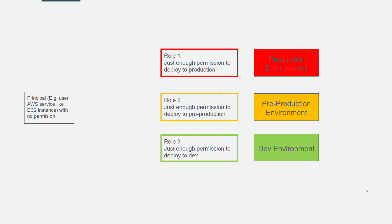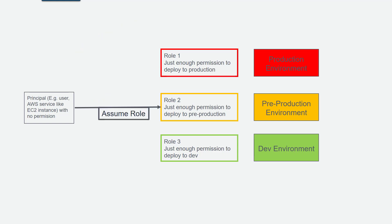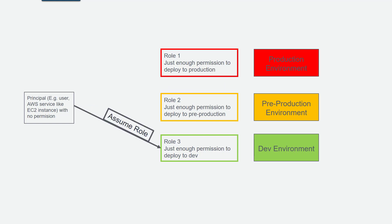The principal doesn't necessarily need to be something you own in your account — it could be another AWS account or a user from a partner or customer account. Once these roles trust this principal, the principal can assume the appropriate role: if deploying to production, assume Role 1; for pre-production, assume the pre-production role; for development, assume that role and push changes. In this way, you have a single principal with multiple roles corresponding to different environments, switching between them to assume just enough permissions for each environment — making it more secure and less error prone.